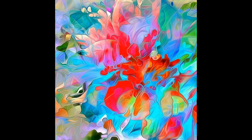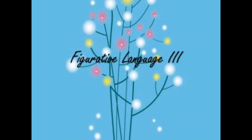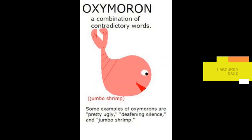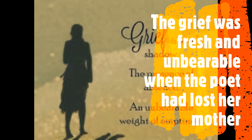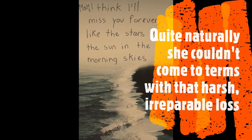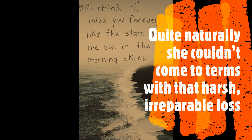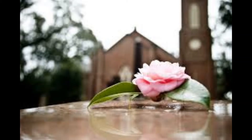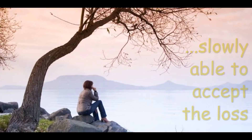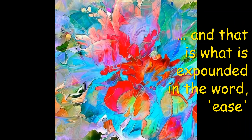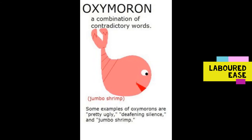With 'laboured ease of loss', the figure of speech used here is oxymoron. The oxymoron is used in the expression 'laboured ease', and both words contradict each other. The grief was fresh and unbearable when the poet had lost her mother; quite naturally she couldn't come to terms with that irreparable loss. She had laboured hard and slowly become able to accept the loss — and that is what is expressed in the word 'ease'. An oxymoron is the use of two words that oppose or contradict each other.